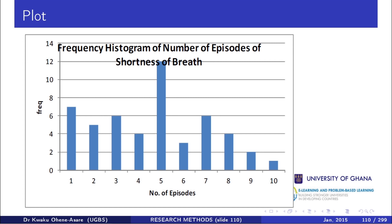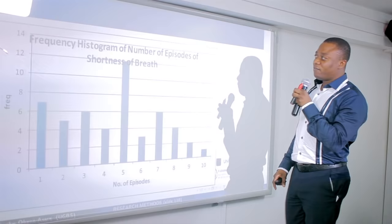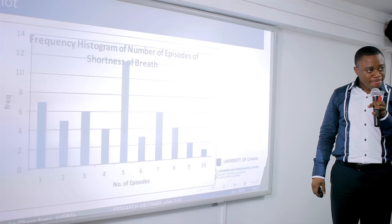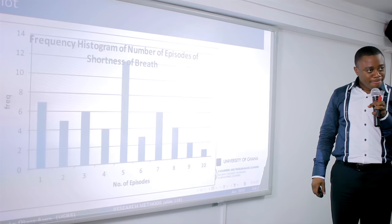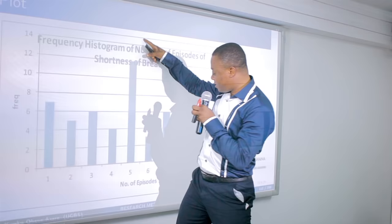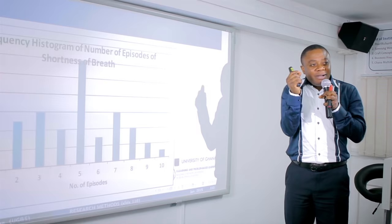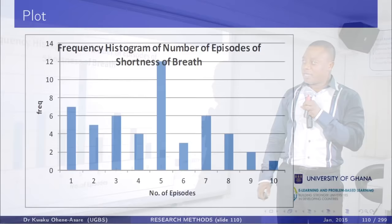This is the frequency histogram of the number of episodes of shortness of breath. Does it look normally distributed? A normal distribution has just one peak, rising and falling symmetrically. But this histogram has many peaks — it clearly does not look normal. Given the non-normality and the small sample size of five in each group, a non-parametric test is appropriate.